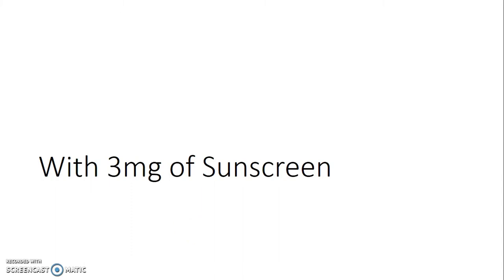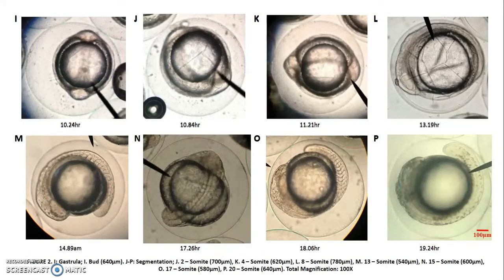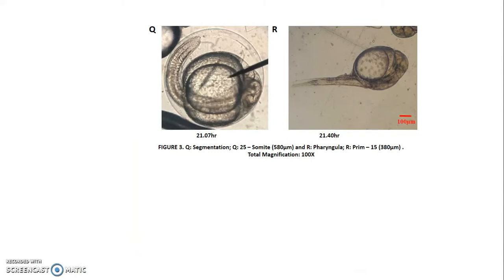Moving on to the results. The first concentration is 3 mg/L of sunscreen. Since we started later than the other treatments, the eggs in the tanks were already in the blastular period, within the high-to-oblong transition. After that, the eggs developed well into their respective stages. The total time was 21.40 hours to ensure hatching of the eggs, and the eggs finally hatched at 4:46 PM.